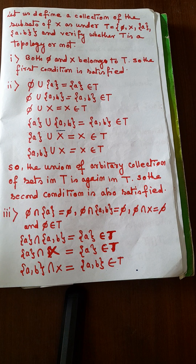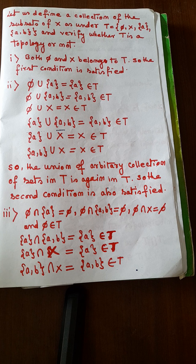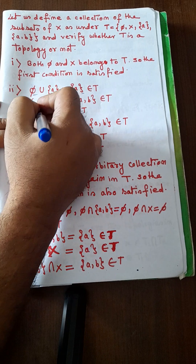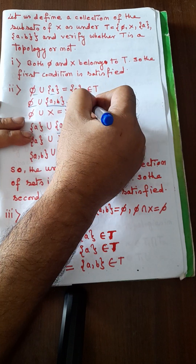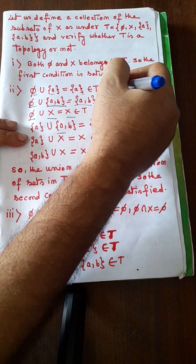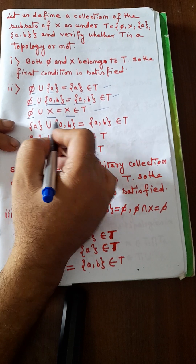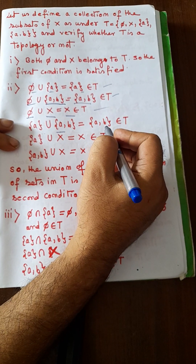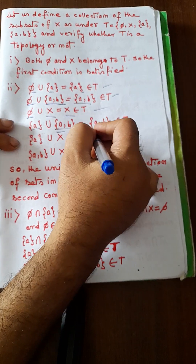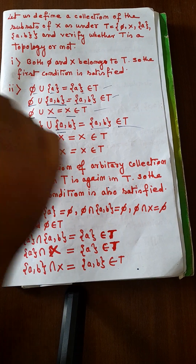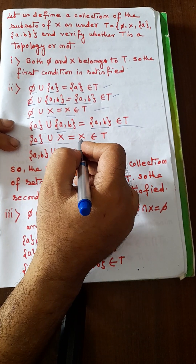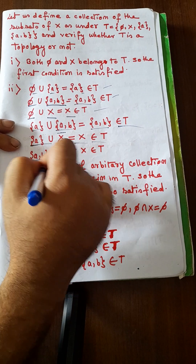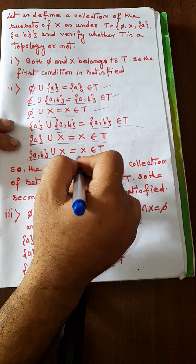Let us define a collection of subsets of X as T = {φ, X, A, AB} and verify whether T is a topology or not. Both φ and X belong to T, so the first condition is satisfied. Now checking unions: φ∪A = A, φ∪AB = AB, φ∪X = X — all belong to T. Union of A and AB gives AB, which also belongs to T. Union of A and X gives X, and union of AB and X gives X — both belong to T.